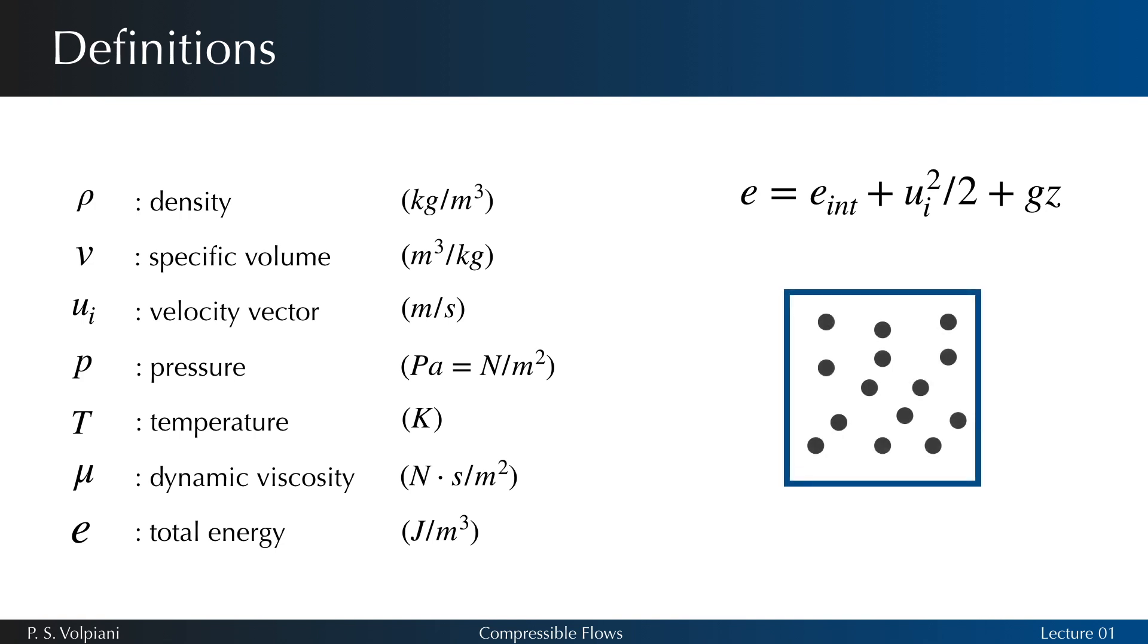e is formed by the intrinsic internal energy manifested by the motion of the molecules within the system, the kinetic energy represented by the movement of the system as a whole, and the potential energy caused by the position of the system in a field of gravity. This last term is often neglected since the fluid is a gas at high velocities. No other types of energy will be addressed in this course, such as dissociation energy.